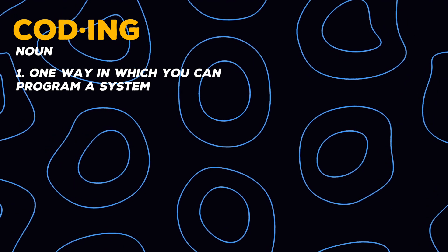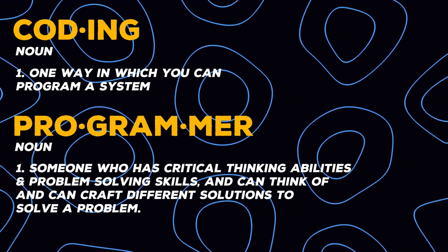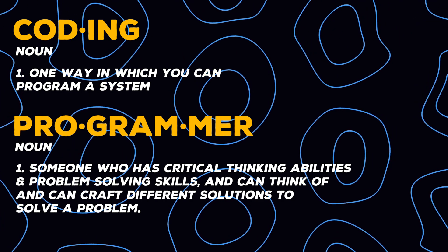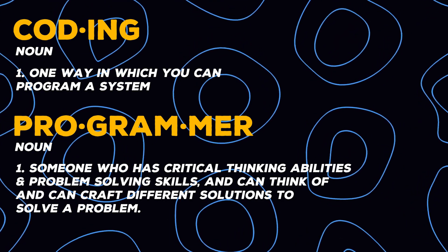Let's tackle the big problem: will AI replace software engineers? The first thing to think about is separating what it means to be a programmer versus a coder. Coding is just one way in which you can program a system. A programmer is someone who has critical thinking abilities and problem-solving skills and can craft different solutions to solve a problem — coding being just one of those outlets. The critical thinking and problem-solving parts are still very necessary.